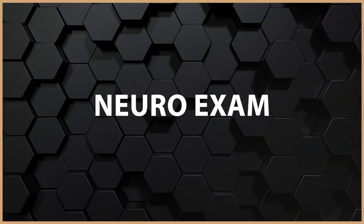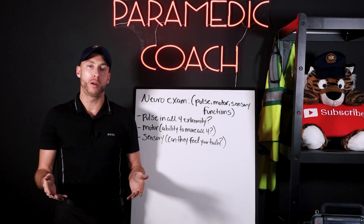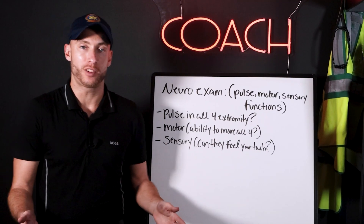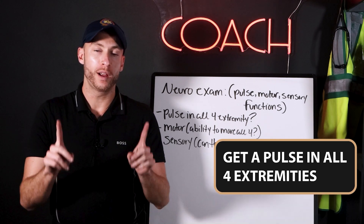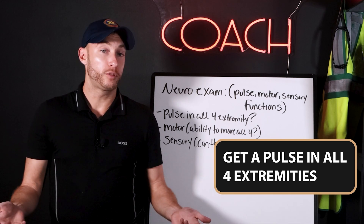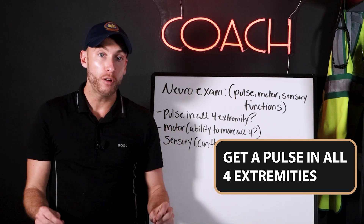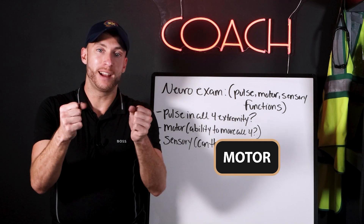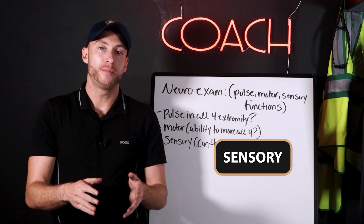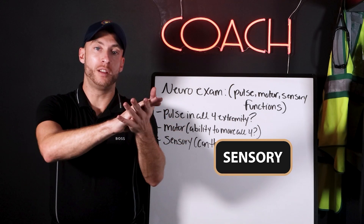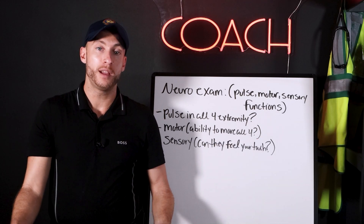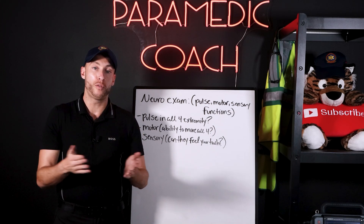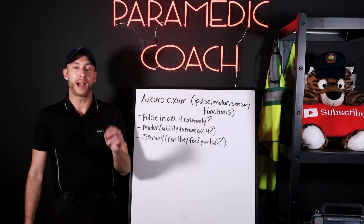A quick neuro exam — pulse motor sensory function — is an important extended vital sign during a focused assessment. Check for a pulse in all four extremities. For motor, assess equal grips: can they squeeze your hand and move their feet? For sensory, check if they can feel you touching each extremity. If pulse, motor, and sensory are intact in all four extremities, that is documented as pulse motor sensory times four.